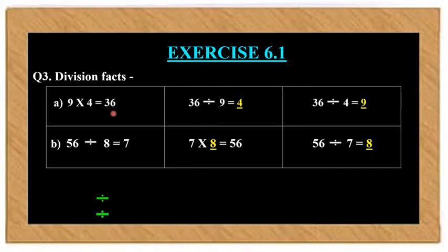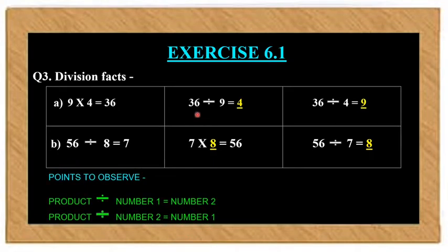This can be written in terms of division as: product divided by any one of the numbers gives you the next number. For example, 36 divided by 9 gives us 4. Similarly, 36 divided by 4 gives us 9.